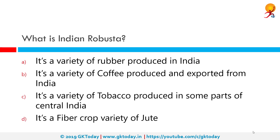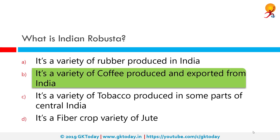What is Indian Robusta? It is a variety of coffee that is exported from India. Indian Robusta constitutes about 65% of India's coffee output. Another variety produced is Arabica. India produces about 4% of the world's coffee but exports 70–80% of it. Indian Robusta has its own niche in the world's coffee market.